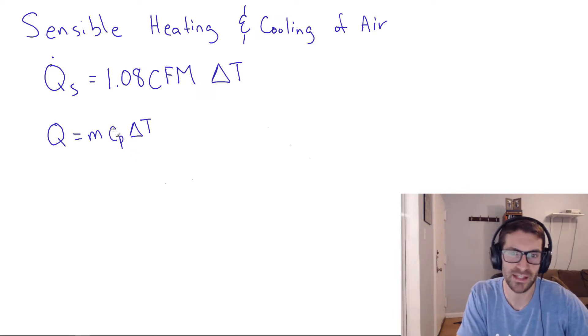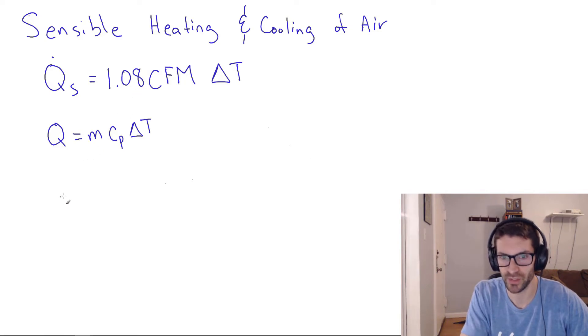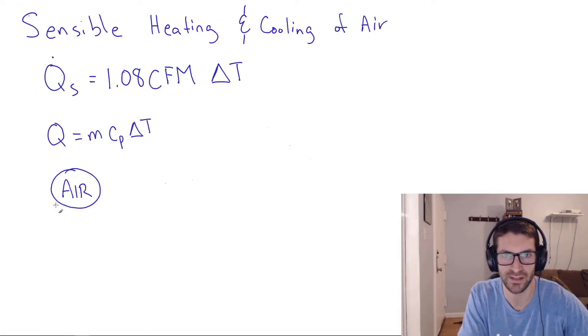Now, the specific heat capacity of air is a function of temperature, so it does change. This is a typical value. 1.08 will get you by most of the time for average temperatures for comfort cooling and heating in indoor spaces that are occupied by people. But it is important to note that this formula is only for air. That's why it's in the title, but I just want to really stress this.